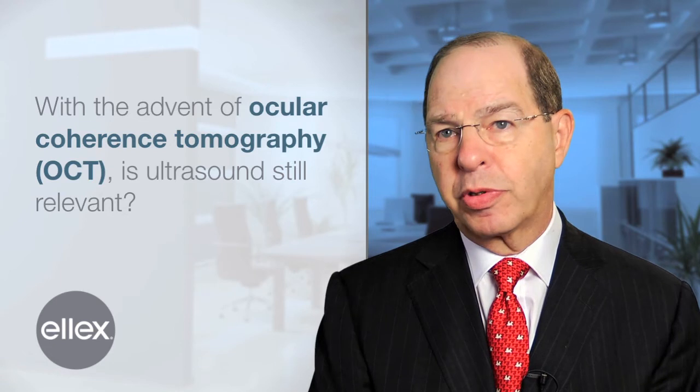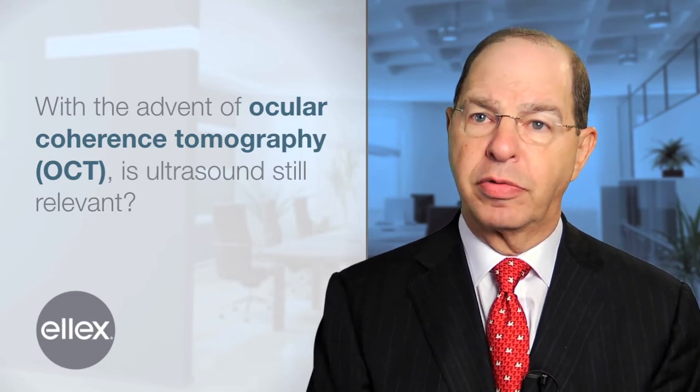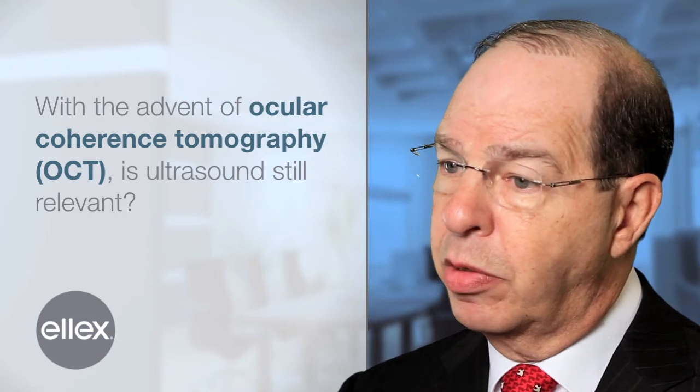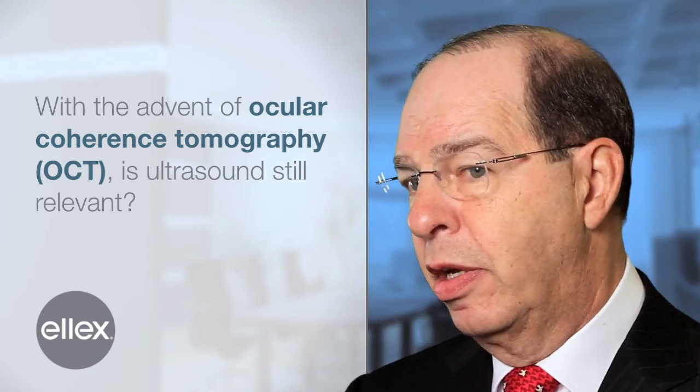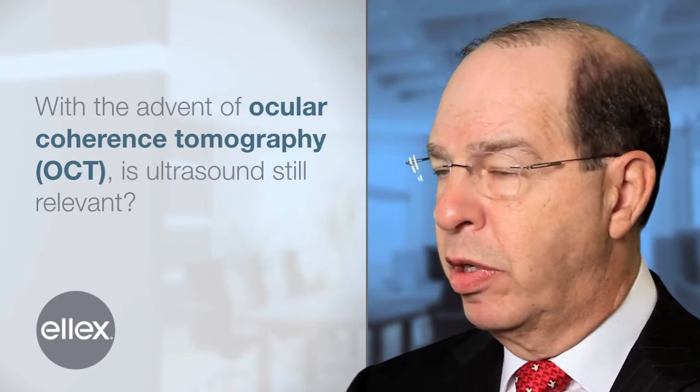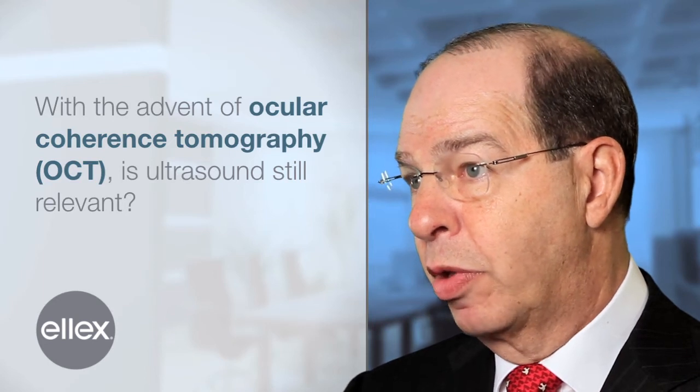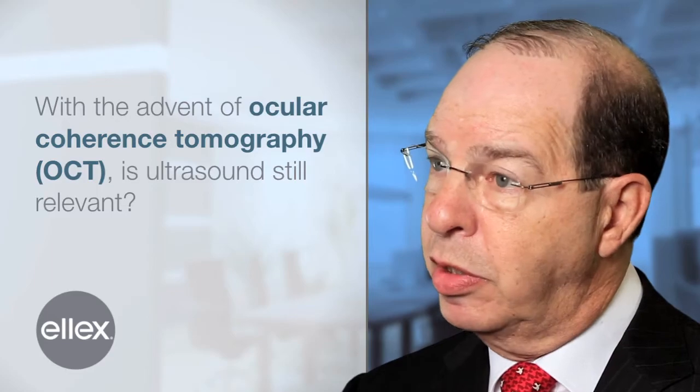A major difference between acoustic impedance mismatch of sound versus reflectivity of light is the ability to see outside the posterior portion of the globe. The periphery is critical to examine and you can't do that with OCT at the present time. I don't look at them as competitive — I look at them as additive. I use B-scan to examine the periphery and OCT for the posterior pole, building an anatomical map of the entire inside of the eye.